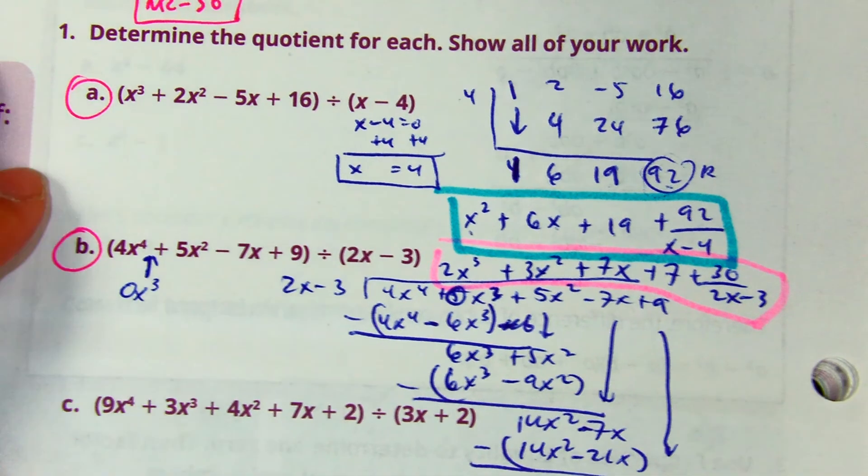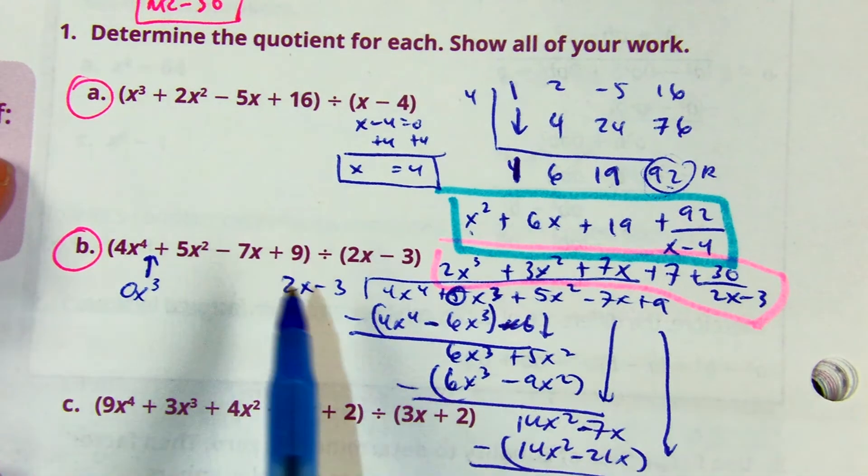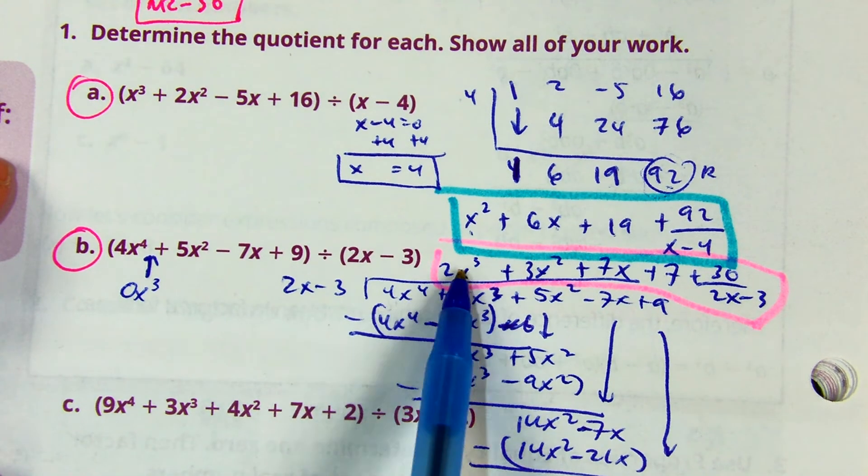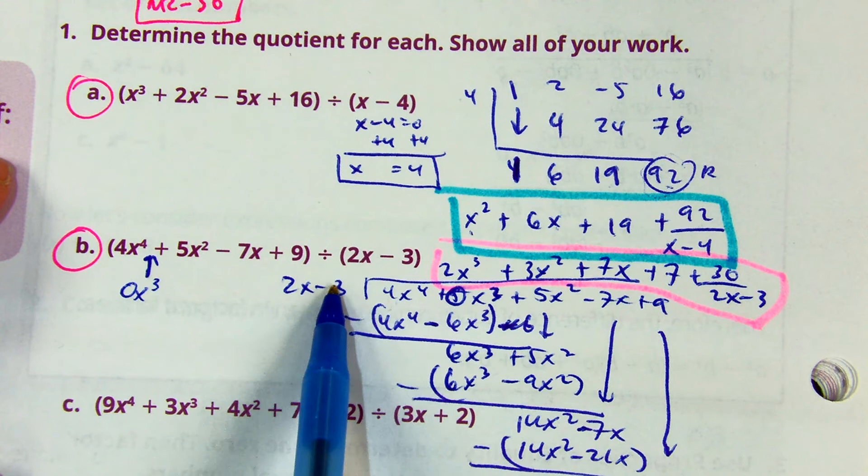I chose to use long division. Divide, do the side problem, multiply, then subtract.